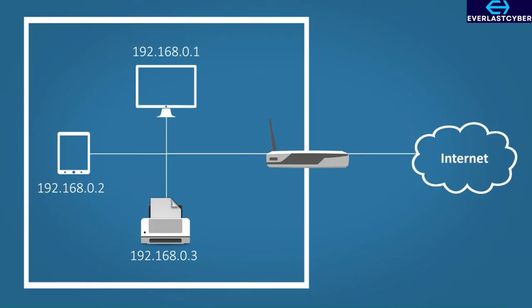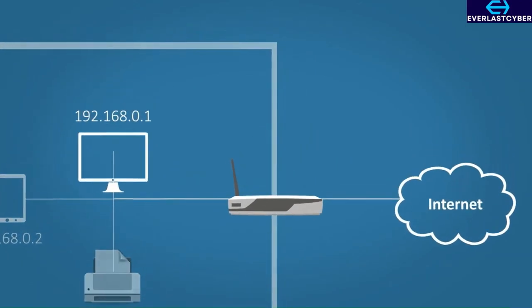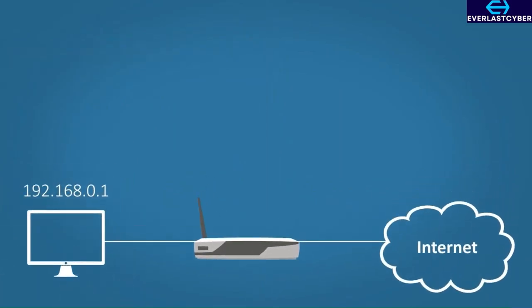This is where NAT comes into play. NAT converts private addresses to public addresses. Let's take a closer look at how this works. We will simplify this to make it easier to understand. First, we'll look at PAT, which stands for Port Address Translation, also known as Overload.